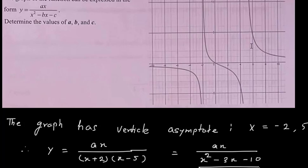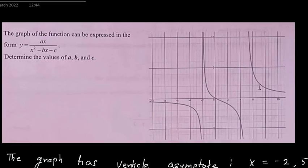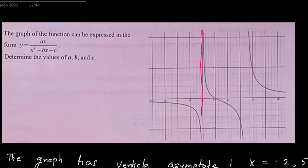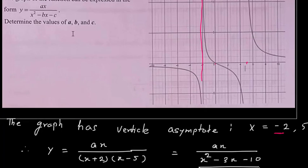First of all, we look for asymptotes. For the vertical asymptotes, you can find one vertical line here — this is x = -2. So x = -2 is one asymptote. Similarly, if you observe, you will get another asymptote at x = 5.